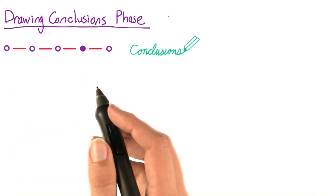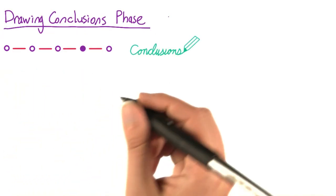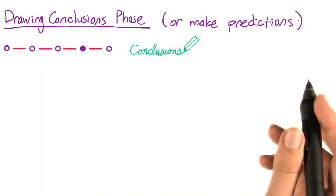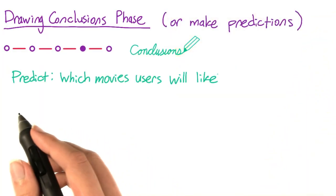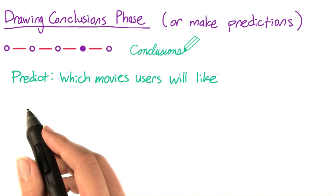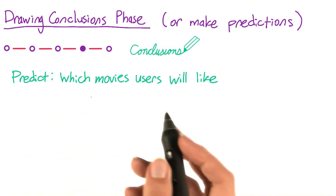Once you're familiar with your data, you'll usually want to draw some conclusions about it, or maybe make some predictions. From one of our examples previously, Netflix's movie recommendation system needs to predict which movies its users will like.